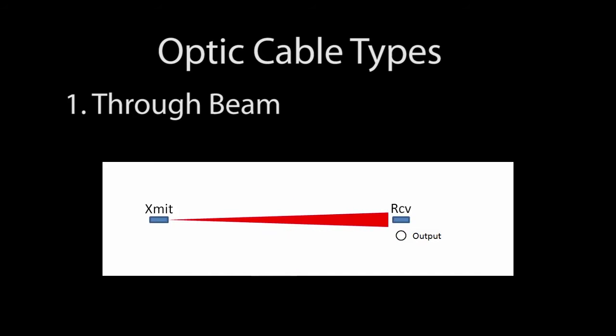In this case, the sensor normally expects to see the light and when the light goes away it triggers the output. We call that dark on. We triggered the output when the light went dark.